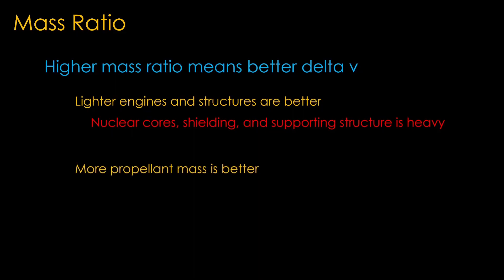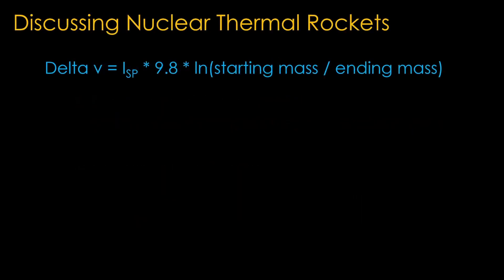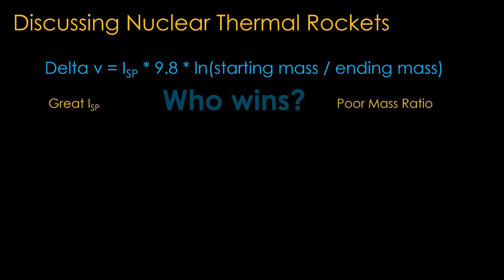The second rule is that more propellant mass is better. But unfortunately, hydrogen propellant is not dense, so you can't put much into a given size tank. What we end up with is an engine with great specific impulse and poor mass ratio. Who wins? Well, it depends on the details.